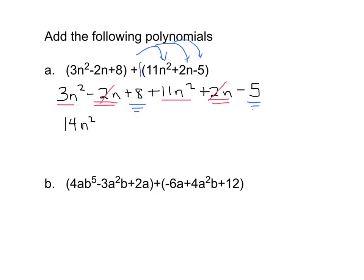And now finally I've got an 8 and a negative 5. 8 minus 5 gives us a positive 3. So when we added those polynomials what we were left with was 14n squared plus 3.